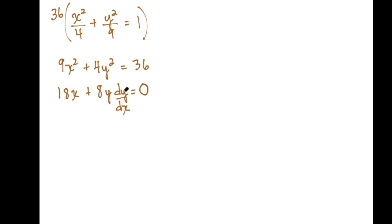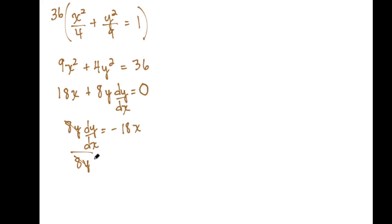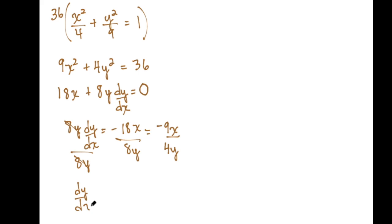Now I need to solve for dy/dx. I subtract 18x from both sides, giving 8y · dy/dx = -18x. To isolate dy/dx I divide both sides by 8y. Simplifying: half of negative 18 is -9x, and half of 8 is 4. So dy/dx = -9x / (4y). This expression gives the slope at each point of tangency on the ellipse.